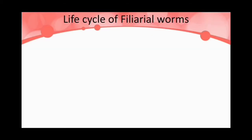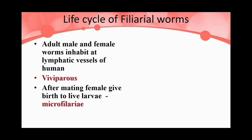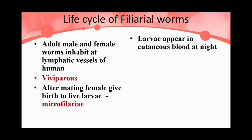Talking about the life cycle of filariasis worms: the adult worms, both male and female, live inside our lymphatic vessels. These worms are viviparous, that is, they give birth to young ones. After mating, the female worm gives birth to live larvae called microfilariae. At night, the microfilariae move to the superficial blood vessels and appear in the cutaneous blood under the skin.